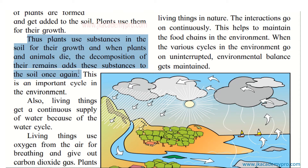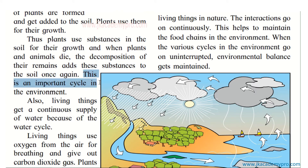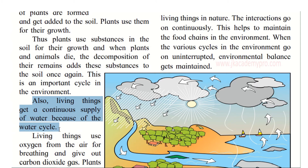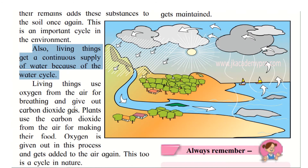That is how substances are added back to the soil so plants can take these nutrients. This is an important cycle in the environment — this whole process that goes on continuously. In the same way, living things get a continuous supply of water because of the water cycle.